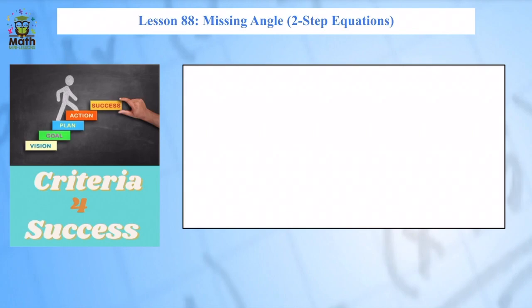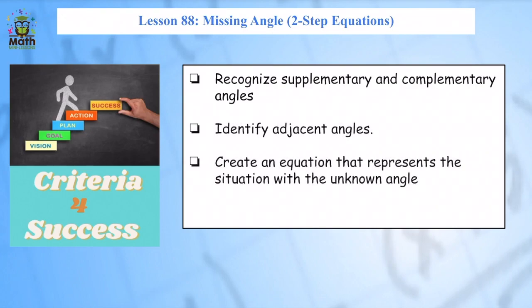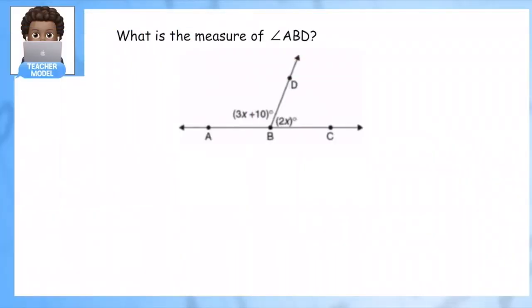Welcome to Lesson 88: finding the missing angle using two-step equations. While I'm modeling, look out for how we recognize supplementary and complementary angle pairs, how I identify adjacent angles and use that information to create an equation that represents a situation with the missing angle, and I'm going to use those equation-solving skills to solve for the missing angle.